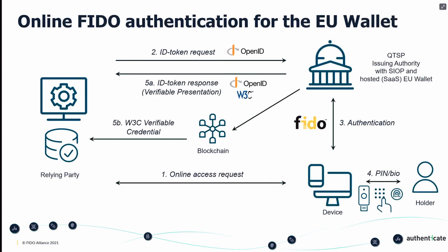The other scenario considered is online FIDO authentication for the EU wallet, using a hosted SaaS EU wallet at the issuer. The user — the holder — tries to use online access to the relying party. The relying party returns an ID token request in OpenID SIOP format. FIDO is used in step three for authentication from the device. In step four, identification occurs with PIN or biometrics, meaning credentials are released in the hosted wallet. Finally, the ID token response is submitted back as a verifiable presentation to the relying party, where it is validated in conjunction with a verifiable credential from the blockchain.